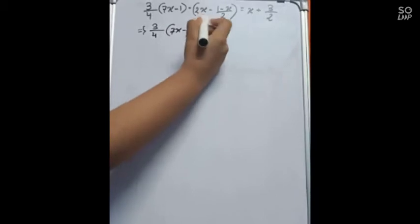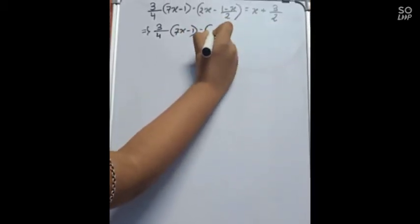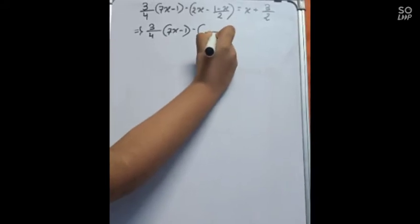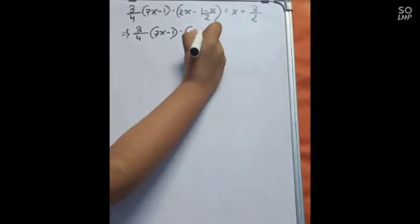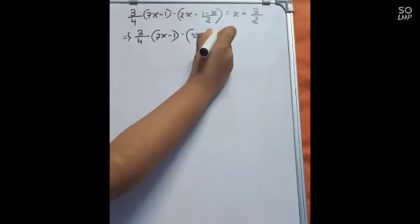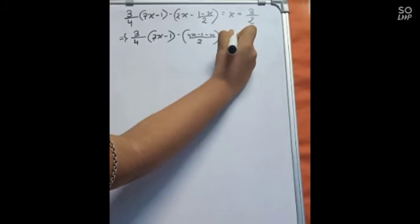We will first solve this bracket portion. We will take 2 as a base. 4x minus 1 minus x equals to x plus 3 by 2.